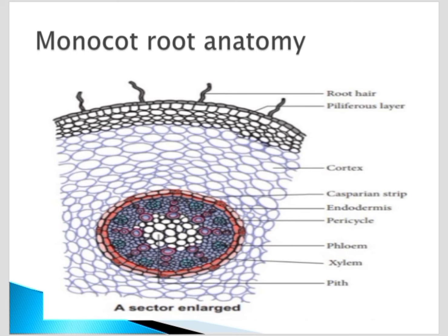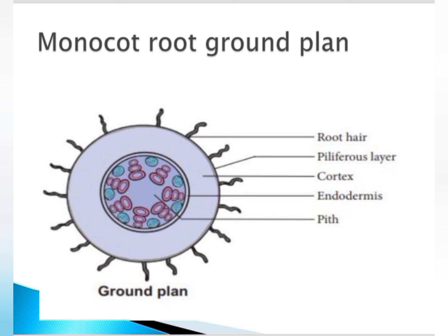Comparatively, in dicots the xylem are only in tetrarch condition, but here in monocots it is polyarch — many xylem we can see. Proto xylem and meta xylem structures are also visible, and they are covered with pericycle. Casparian stripes where suberin is deposited are present, and of course root hairs are present for absorption. The pilliferous layer is present, and root hairs absorb water which is then transported by xylem to the upper regions.